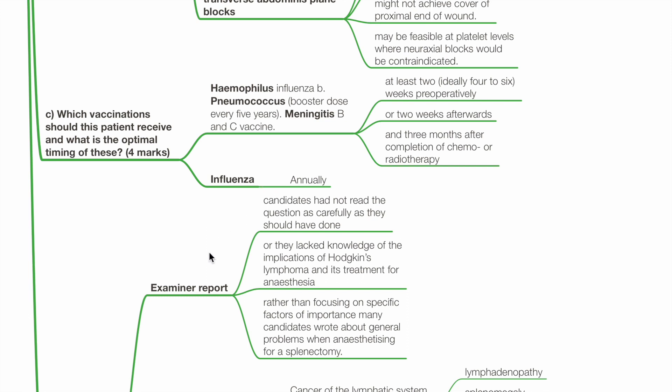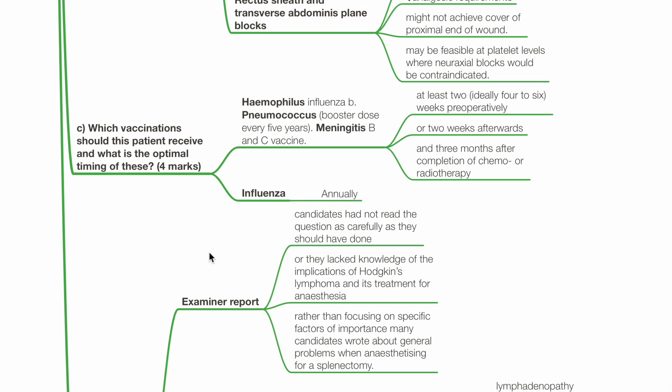Question C: Which vaccinations should this patient receive and what is the optimal timing? For Haemophilus influenzae B, pneumococcal vaccine, and meningitis B and C vaccines, the patient should receive them at least 2 weeks preoperatively, or 2 weeks afterwards and 3 months after completion of chemotherapy or radiotherapy. A pneumococcal vaccine booster dose is required every 5 years, and an influenza vaccine every year.